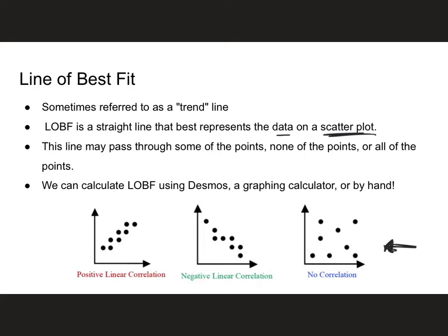A line of best fit is that straight line that best represents the data we see specifically on a scatter plot. We use it to see which way the data is going, to see if there's some relationship that can be modeled by a linear equation. Sometimes this line passes through points, but it doesn't have to. If it's perfectly straight, it could pass through all of the points.